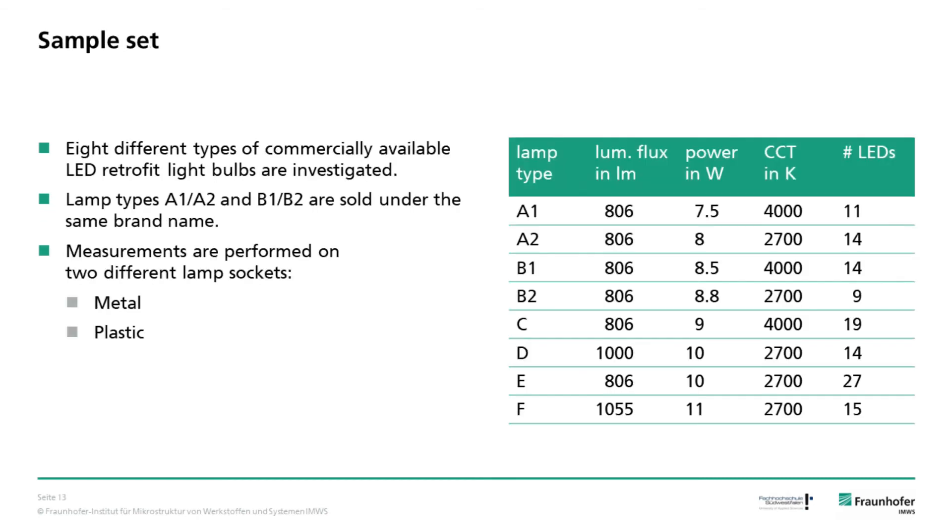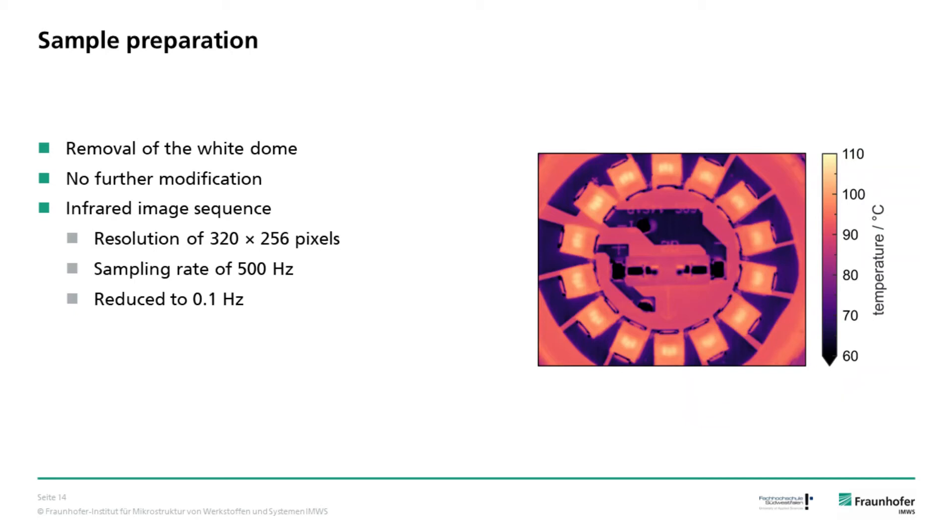Here we look at the sample set used in this work. We used a set of 8 commercially available LED retrofit lamps. Note that the lamps A1 and A2, as well as the lamps B1 and B2, are sold under the same brand and only differ in their CCT. In addition to investigating different lamps, we also investigated the influence of the socket of the lamp. Therefore, we used two different sockets: one mainly made of plastics and the other one mainly made of metal. To prepare the samples, we only removed the white dome of the lamps in order to be able to have a direct look at the LED chips. No further modifications were made.